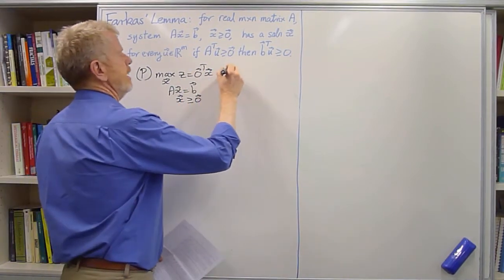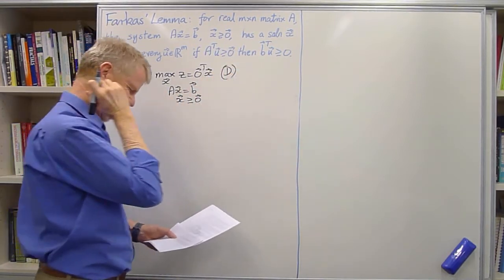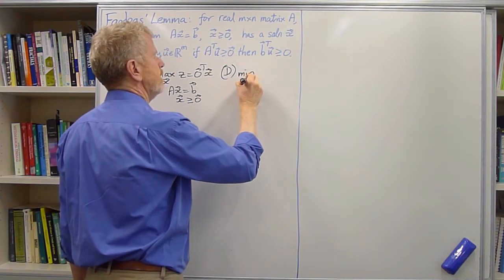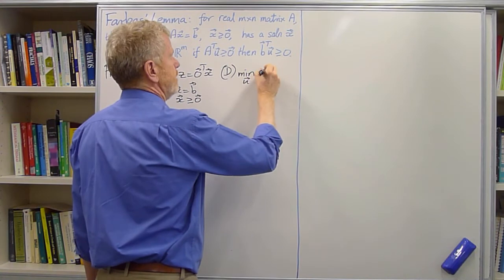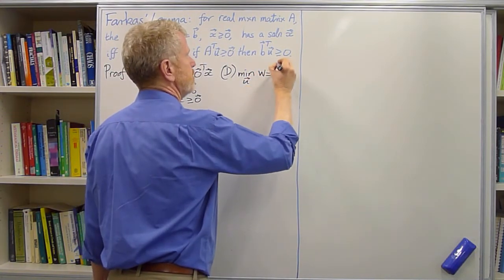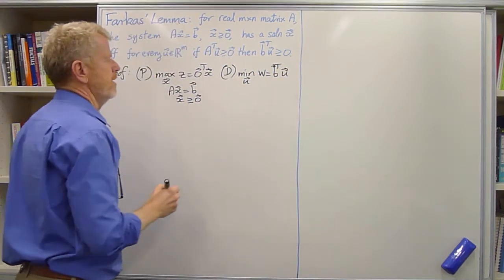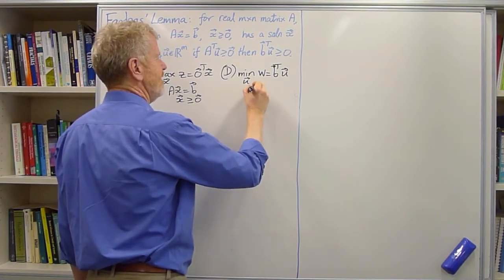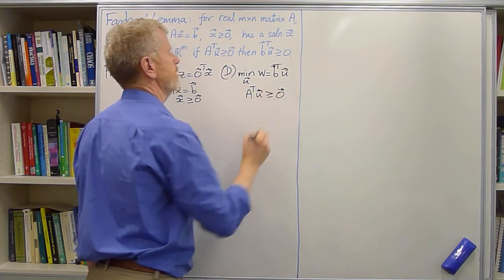And the dual is D, minimize over vector U, W, which is B transpose times U, such that A transpose U is bigger than or equal to 0.